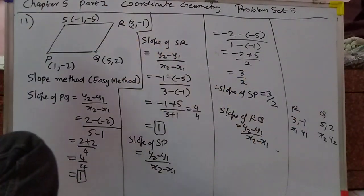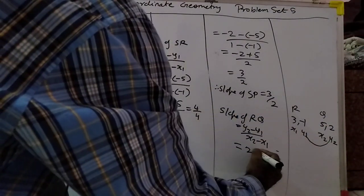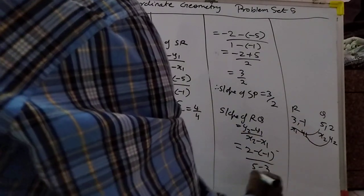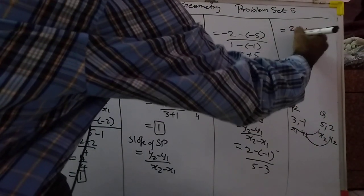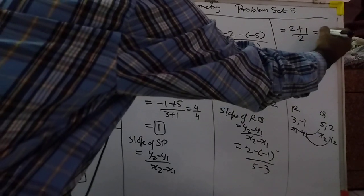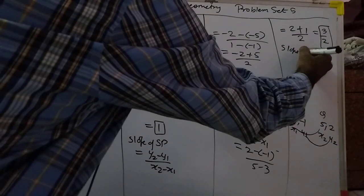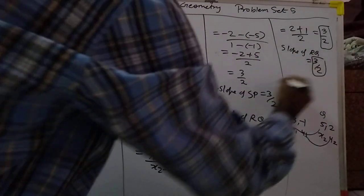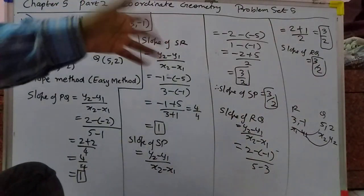That is the point, we subtract it. Here we have 2 plus 1 upon 2, so that is 3 by 2. So slope of RQ is equal to 3 by 2 and it equals slope of SP. So they are equal.